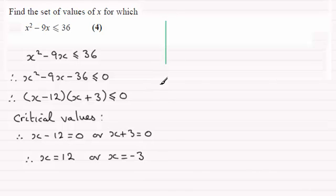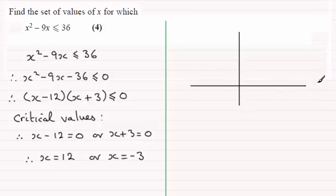Now once you've got the critical values in the usual way, what you need to do is just sketch the graph. So I'm just going to set up my axis here. We'll have x there and the y axis. Now the curve I'm going to draw is y equals x squared minus 9x minus 36 or better still the factorized version of that. So let's just put it up here. Y equals x minus 12 multiplied by x plus 3.